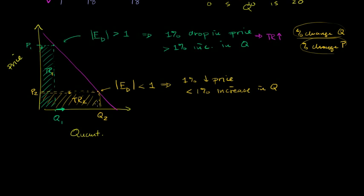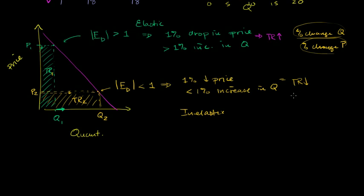We're reducing our height more than we are expanding our width. So in this situation, total revenue would go down. When it is elastic, a drop in price tends to make total revenue go up. And when it is inelastic, a drop in price tends to make total revenue go down.